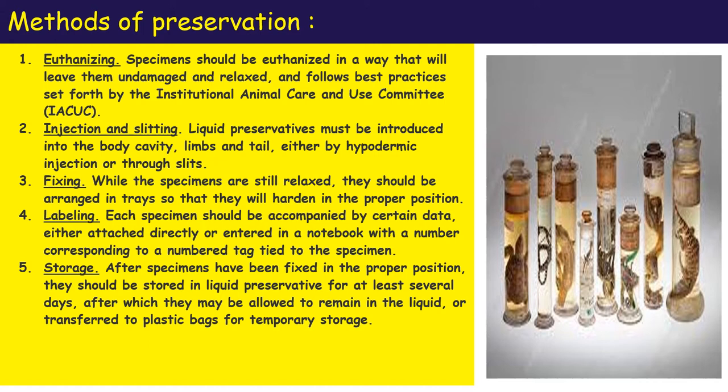The third method is fixing. If we want to preserve specimens in jars or flasks, we must first fix the specimen in a correct position. The fourth method is labeling. Each specimen should be accompanied by certain data, either attached directly or entered in a notebook with a number corresponding to the number tied to the specimen. The label should include the name of the animal, location, and other details.